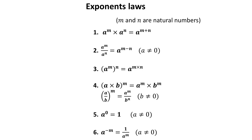Let's quickly look at some common mistakes people make. Oftentimes these mistakes come from people trying to apply the laws of exponents to adding instead of to multiplication and division. So a correct use of this law would be x to the power of 2 multiplied by x to the power of 3. I keep the same base and I add the exponents and get x to the power of 5.